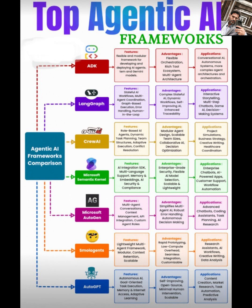First up, we have ADK. This framework is all about flexibility — it's a modular setup, perfect for developing and deploying AI agents, especially with models like Gemini. Its strength lies in orchestration and rich tooling, making it ideal for conversational AI, autonomous systems, or complex agent architectures. If you're building a chatbot or a decision-making system, ADK could be your go-to.